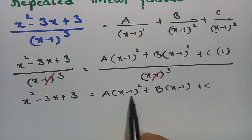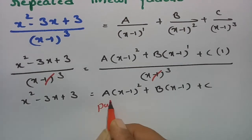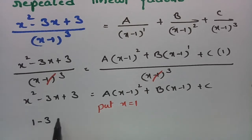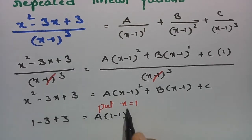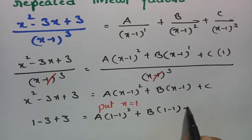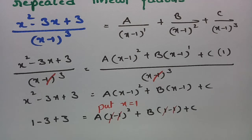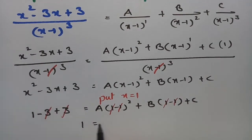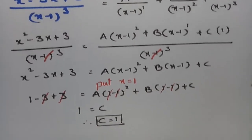To find C, we make (x-1) equal to 0 by substituting x=1. Substituting: 1-3+3 = A(1-1)² + B(1-1) + C. The first two terms become 0, and 1 = C, therefore C = 1.